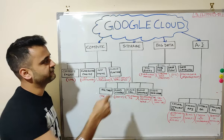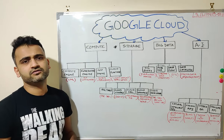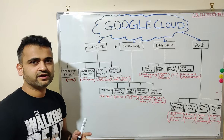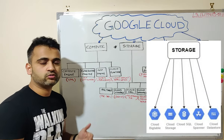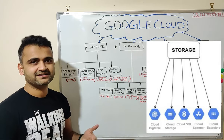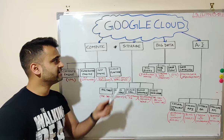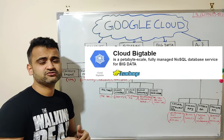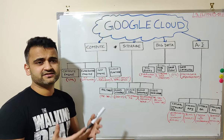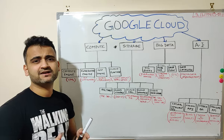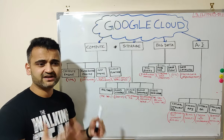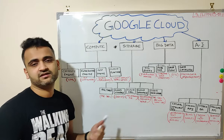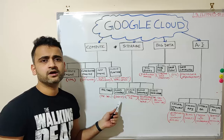Moving on to Storage — this is the USP of Google Cloud, because ever since Google came into the market its storage and data processing has always been its strength. The first major product under Storage is BigTable, which is a NoSQL database. From a layman's perspective, it is a database where you cannot apply traditional relational database concepts. Data that is unstructured, sparse, or not ACID-compliant can be stored in BigTable.